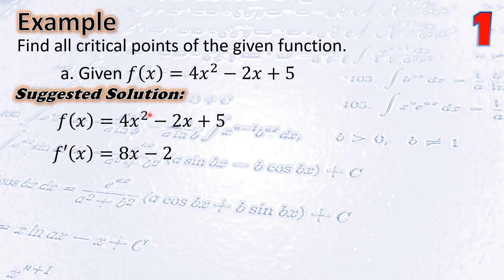From 4x², the derivative is 2 times 4 = 8x, where the exponent of x is 2 − 1. The derivative of −2x is −2. Hence, f′(x) = 8x − 2. The critical points occur when f′(x) = 0, so we equate 8x − 2 = 0.